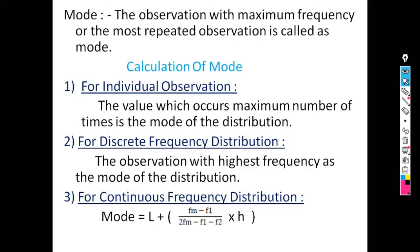Where L is the lower limit or lower boundary of the modal class, Fm is the frequency of the modal class, F1 is the pre-modal frequency, F2 is the post-modal frequency, and H is the class width.